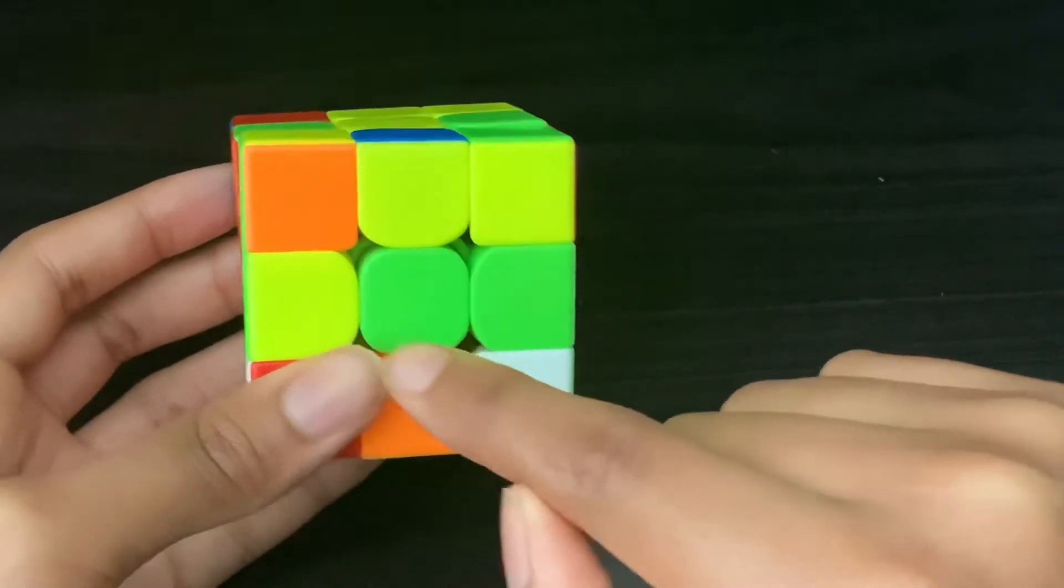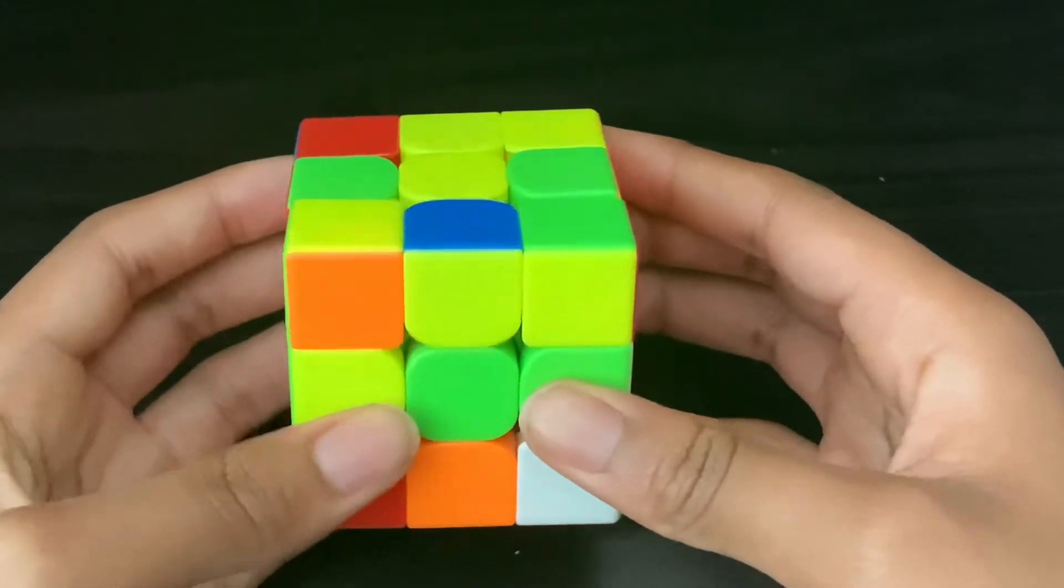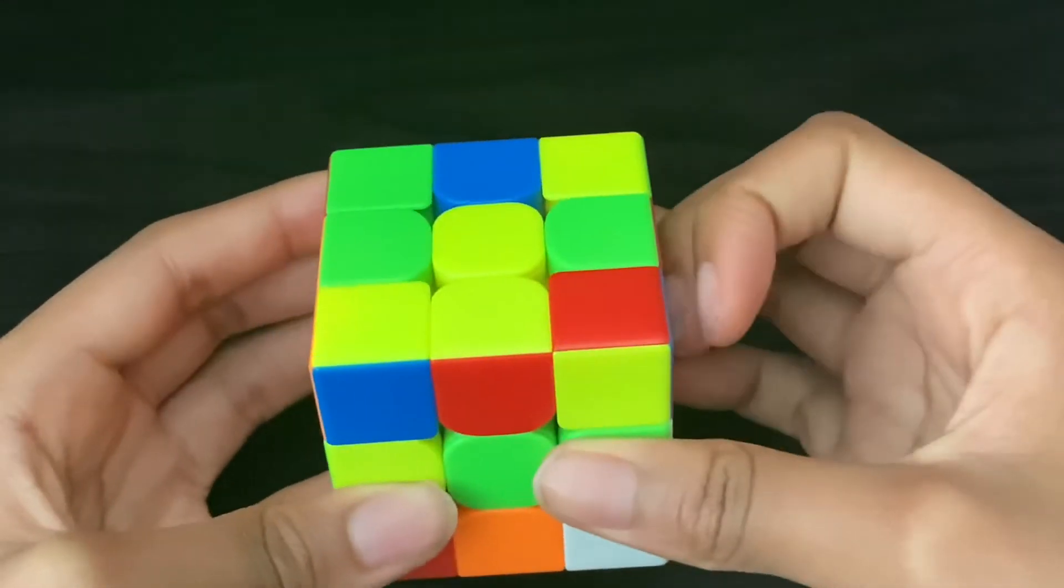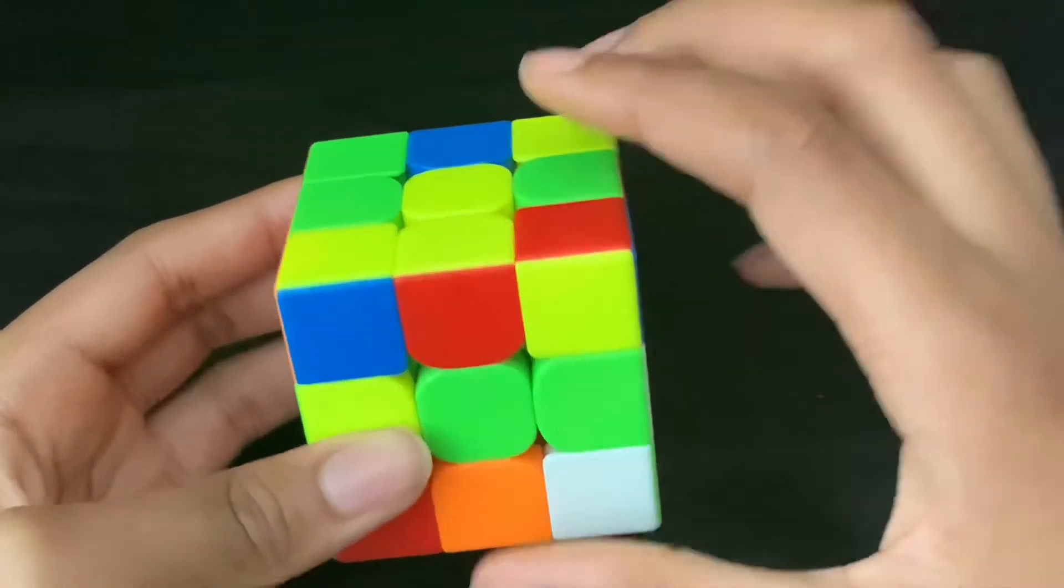You make sure to put the other bad edge on the bottom layer in the DF position. In order to not harm any of these three, you have to do a U2 so that a good edge is in the way, and then we put the bad edge in the DF position.